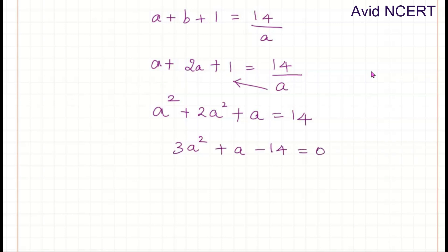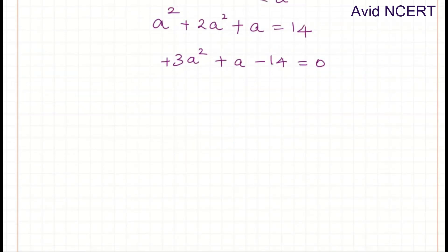Finding the factors of A, which is 3 times -14, which is -42. 6 times 7 is 42. We need when this is added or subtracted to get 1. Since we need positive 1, let's go for the bigger number as positive and the smaller number as negative, which is +7 - 6 equals positive 1.